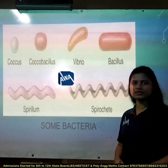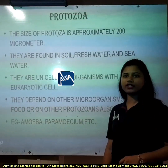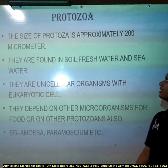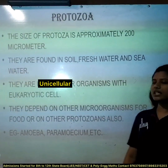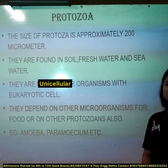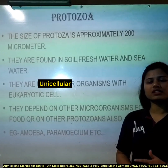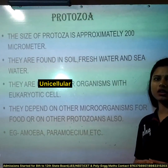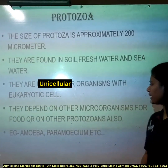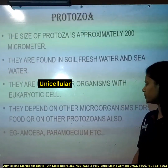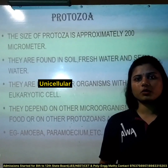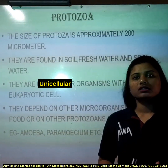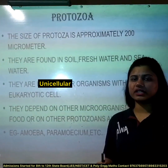The next microorganism is protozoa. The size of protozoa is approximately 200 micrometers. They are found in soil, fresh water, and sea water. They are unicellular organisms with eukaryotic cells, meaning they have a well-defined nucleus and cell organelles. They depend on other microorganisms and on other protozoa for their food.